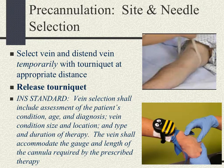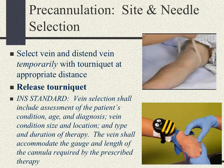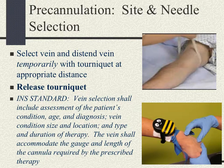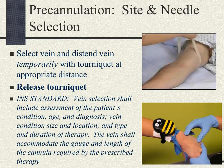There's varying information on where to place the tourniquet — some say 4 to 6 inches above, some say 6 to 8 inches above, so 4 to 6 inches is a good rule of thumb. In the video, you might see it placed just 1 to 2 inches above the site, but that takes practice and skill, and you'll learn what works best for you, as it may not be the same on all patients.